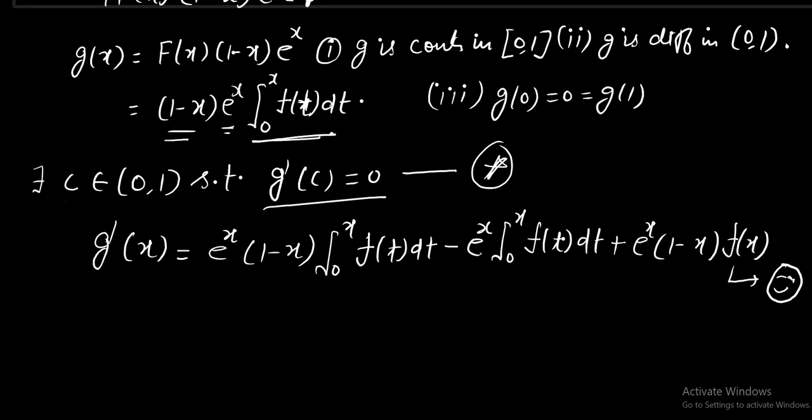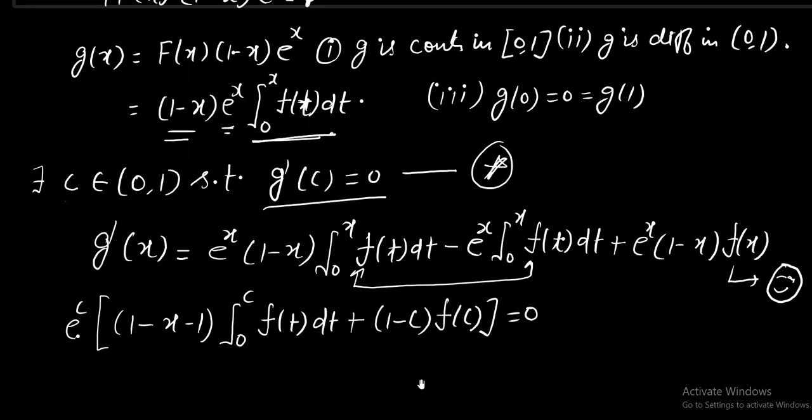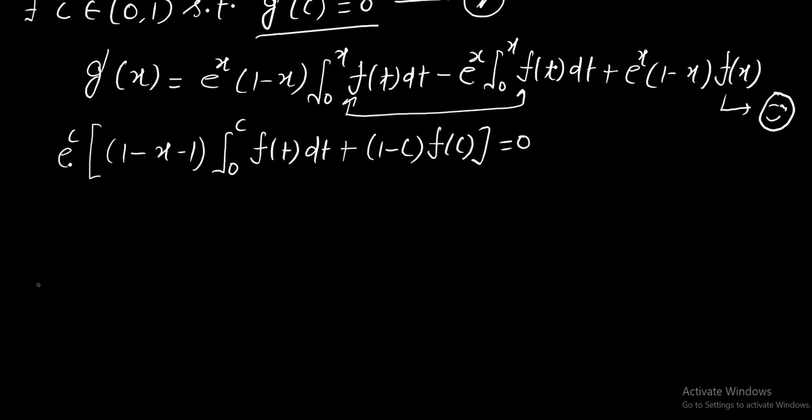Now g'(c) = 0. It means in smiley we have to replace each x with c. And eᶜ is common. Take these two, club these two. We have (1-c-1)∫₀ᶜf(t)dt. Last term is (1-c)f(c) = 0. eᶜ is a positive quantity. We can shift it in the denominator of 0 and take the first section to right hand side. So, we are getting (1-c)f(c) = c∫₀ᶜf(t)dt. This is what we have to prove.